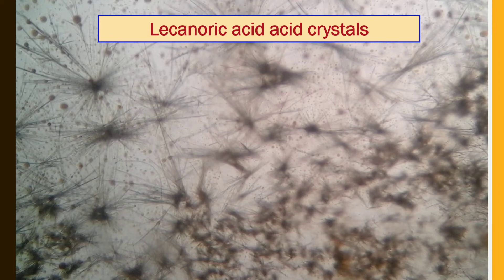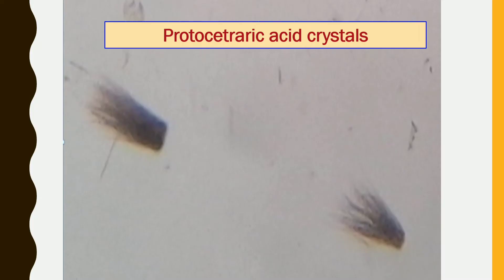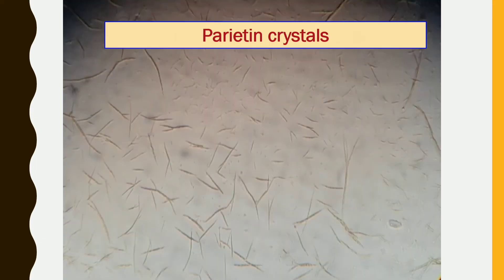Lacunoric acid crystals are star-shaped crystals identified from Parmelia mastocyanins. Calicin crystals — look at these — have been identified from the Chrysotrix species. Protocetraric acid crystals were identified from Flavoparmelia caparata species, and usnic acid crystals were identified from the Ramalina species.